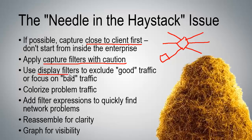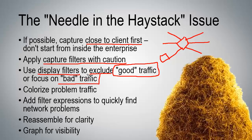Use display filters liberally. You can use them to exclude some traffic — for example, all the good traffic. Maybe you want to exclude all of the virus update traffic or exclude all of the Citrix GoToMyPC traffic that you expect to see in the background. What you should have left when you exclude all the good traffic is the bad traffic. Alternatively, you can do an inclusion filter where you say you want to only see the bad traffic, such as HTTP response codes greater than 399.